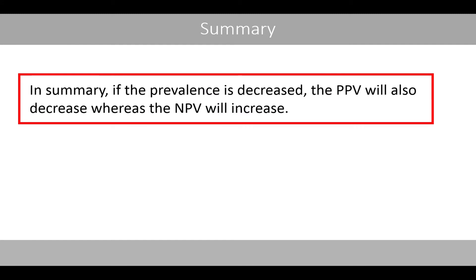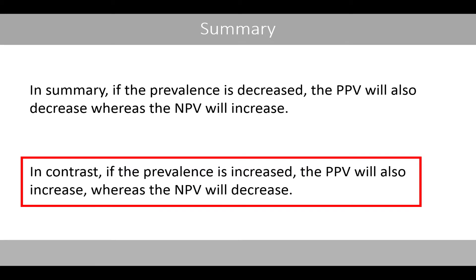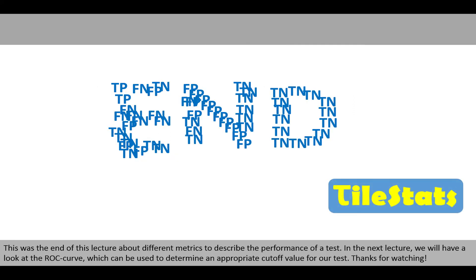In summary, if the prevalence is decreased, the positive predictive value will also decrease whereas the negative predictive value will increase. In contrast, if the prevalence is increased, the positive predictive value will also increase whereas the negative predictive value will decrease. This was the end of this lecture about different metrics to describe the performance of a test. In the next lecture, we'll have a look at the ROC curve, which can be used to determine an appropriate cutoff value for our test. Thanks for watching.